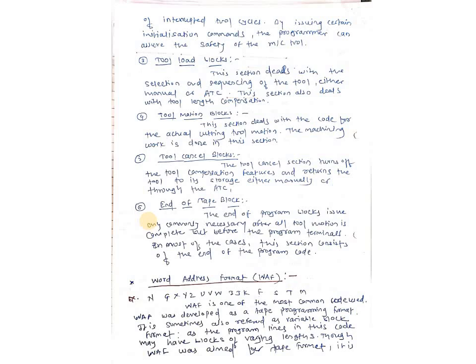The first letter N is for operation number — you can give any operation number, such as N001, which indicates the first operation. Next, capital G means preparatory functions code, that is the G code — whatever code we are going to use, we have to write it here. Next, X Y Z U V W I J K — that is the dimension or coordinate value. Whatever coordinate values are required, we input them in terms of X Y Z U V W I J K. Next, F indicates the feed — whatever feed is required for that tool. S means speed. T means tool number — which tool we are going to use, we have to mention that tool number. And M is for miscellaneous function. This is a very useful format for making programs in NC part programming.